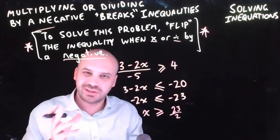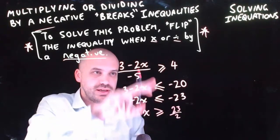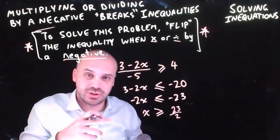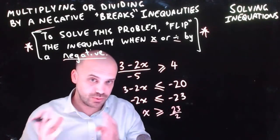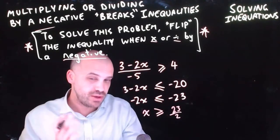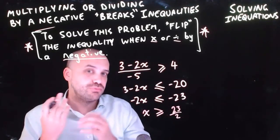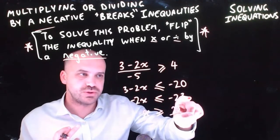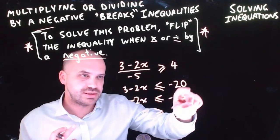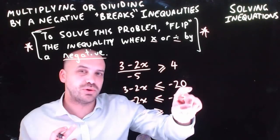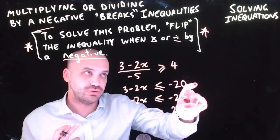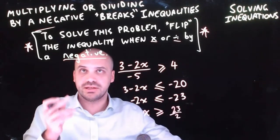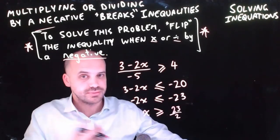Interestingly, you would have gotten the right final answer if you hadn't flipped at all, but all the intermediate inequalities would have been wrong. You need to flip correctly at each step. And that is solving inequalities.